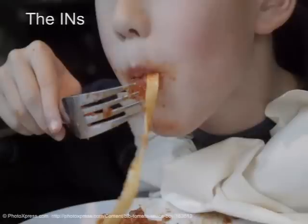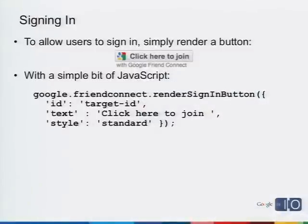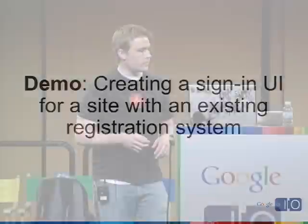Let's talk about the ins first. The goal is to allow a Friend Connect user to log into your site as if they were a registered user. There are three things we'll do: let them sign in, obtain their social data, and then store it. You do need a little bit of cut-and-paste code to do a deep integration — basically a button to let the user click, which logs them into Friend Connect, handles all the UI work, and then you can start pulling their data from your server. Thankfully, it's a very short piece of code — just four lines.